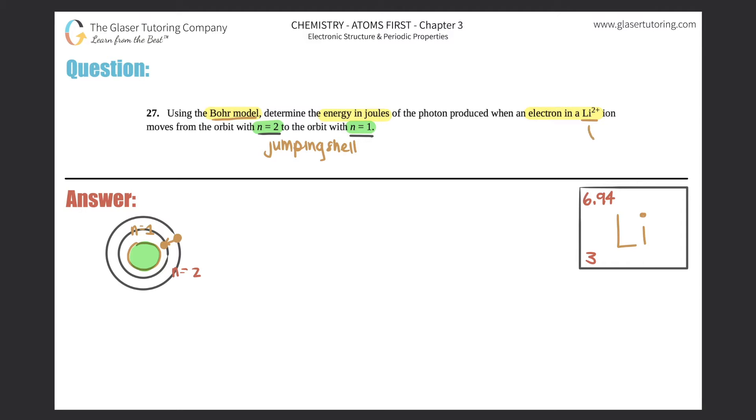But what else do we know that's part of the Bohr model? Well, this lithium was 2 plus, so that means it lost two electrons and it had 3 to begin with. So this is hydrogen-like, they call it. It looks very similar to hydrogen because they both have one electron.